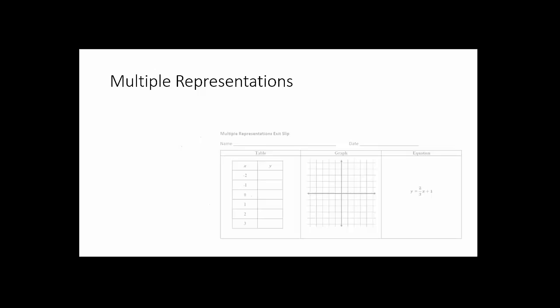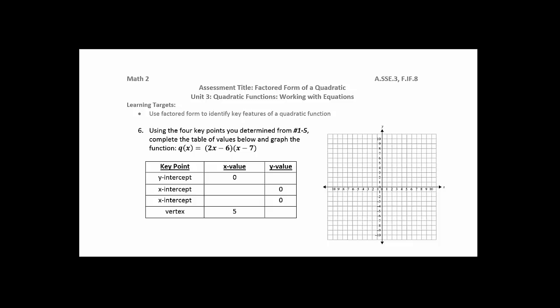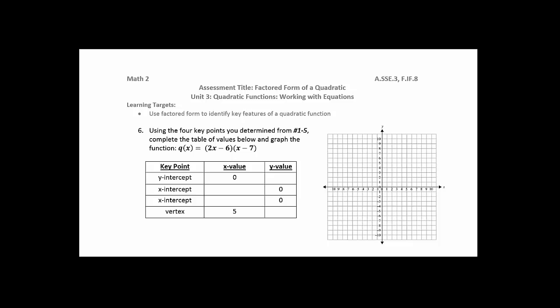Here's an example from eighth grade looking at functions and linear models — students may be able to take a table model, a graph model, and an equation, and connect that to a real-world situation. Or at the high school level looking at quadratics, we're looking at the representation between tables and graphs and interpreting those different models. We see this repeated over and over again — students working with these different multiple representations.